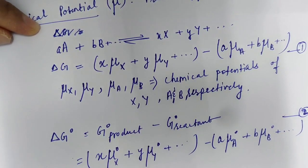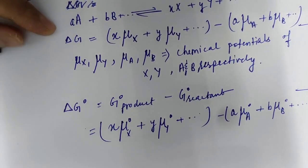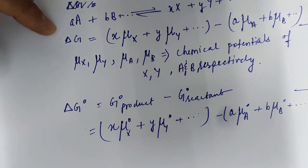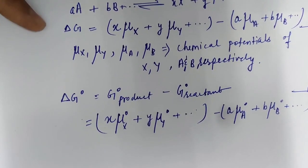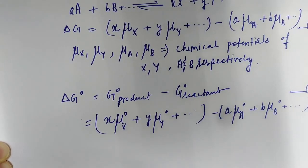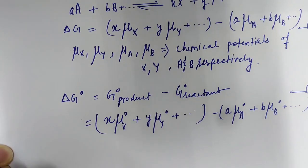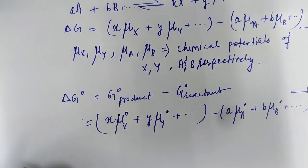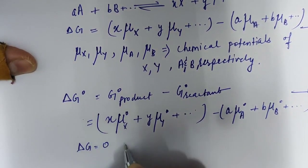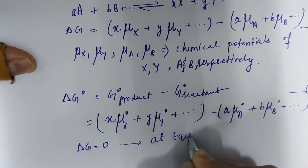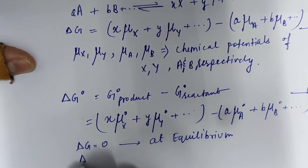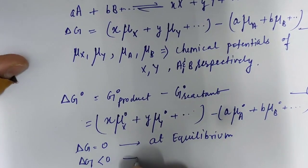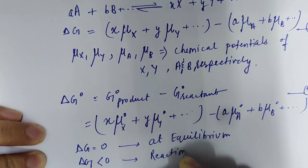Regarding Delta G values: Delta G equals zero at equilibrium, meaning the Gibbs free energy of products becomes equal to that of reactants at equilibrium. A reaction is spontaneous when Delta G is negative. So: Delta G equals zero at equilibrium, and Delta G less than zero means the reaction is spontaneous.